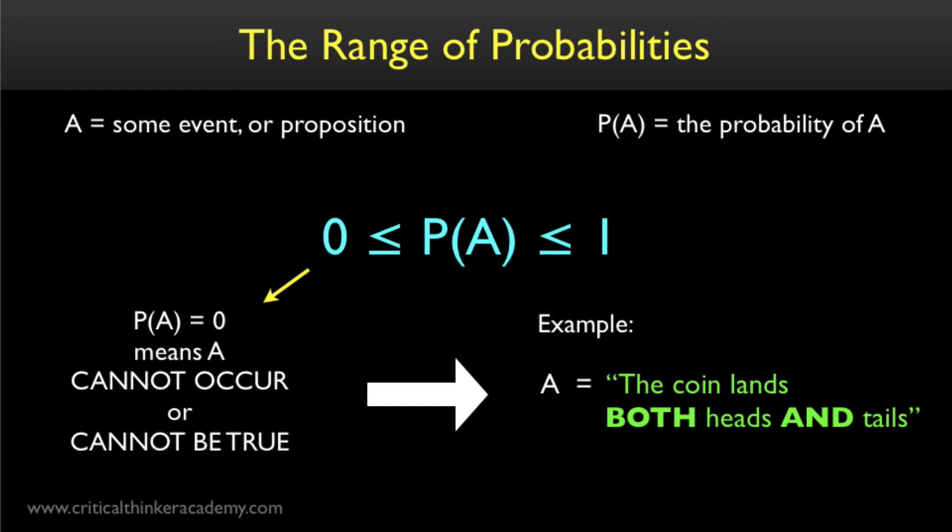If a coin landing heads means that it didn't land tails, and vice versa, then it's a contradiction to say that the coin landed both heads and tails at the same time. That's a contradiction, and can't possibly be true. So, we assign it probability zero.